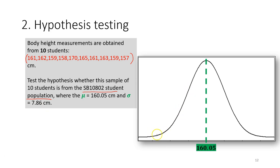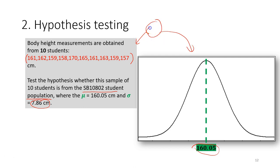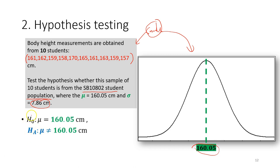We know the population parameters — the mean and the standard deviation. I have a sample of 10 students and I want to test whether this sample belongs to that population. If the sample belongs to the population, that means the sample mean should be similar to the population mean. This is how we construct our hypothesis.